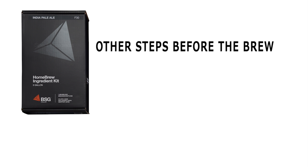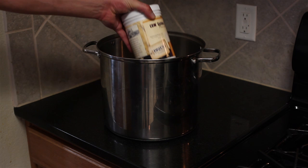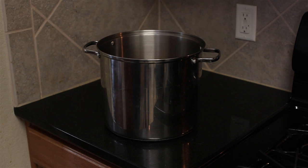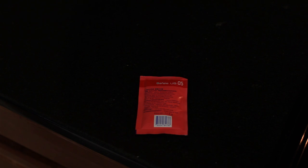Other steps before the brew: Prior to beginning the brew, you should place the malt extract in a bath of warm water to allow it to become more viscous. It is a very thick syrup-like liquid, and if it's too cold, it won't pour very well. You should also ensure that your yeast is at room temperature.